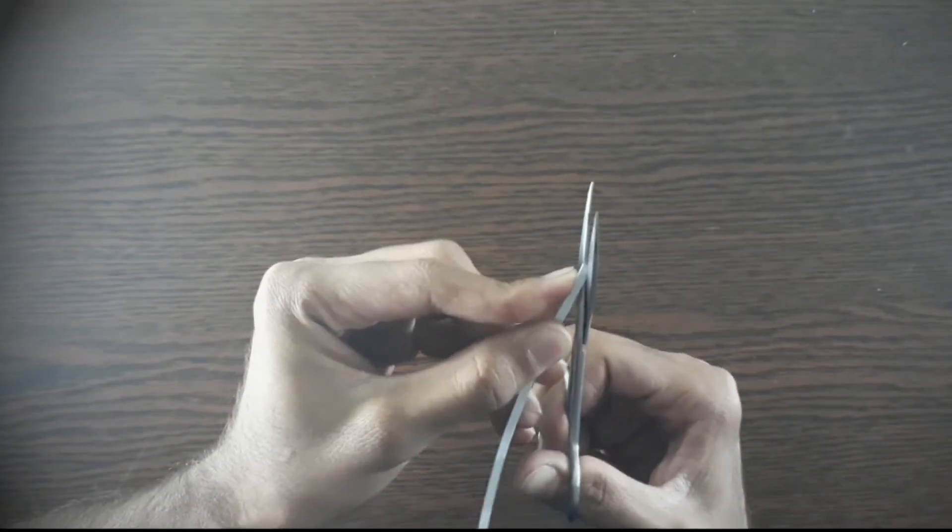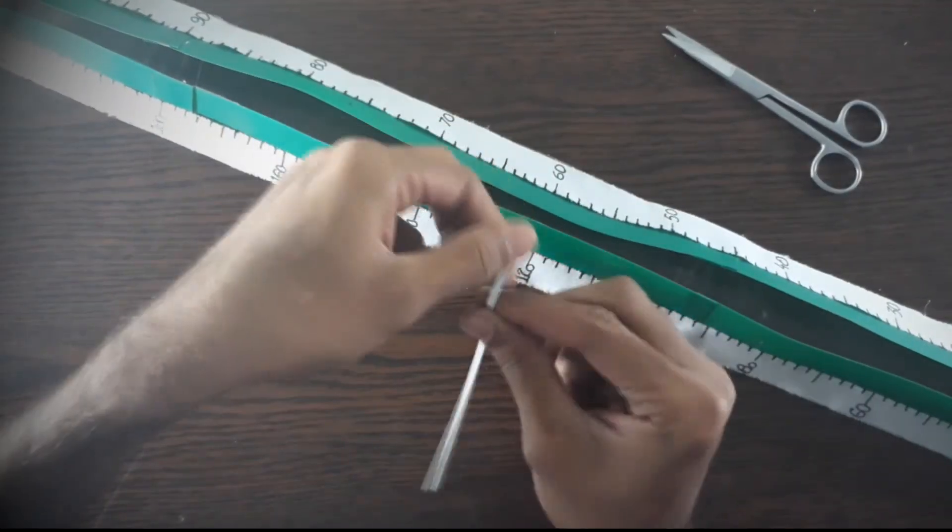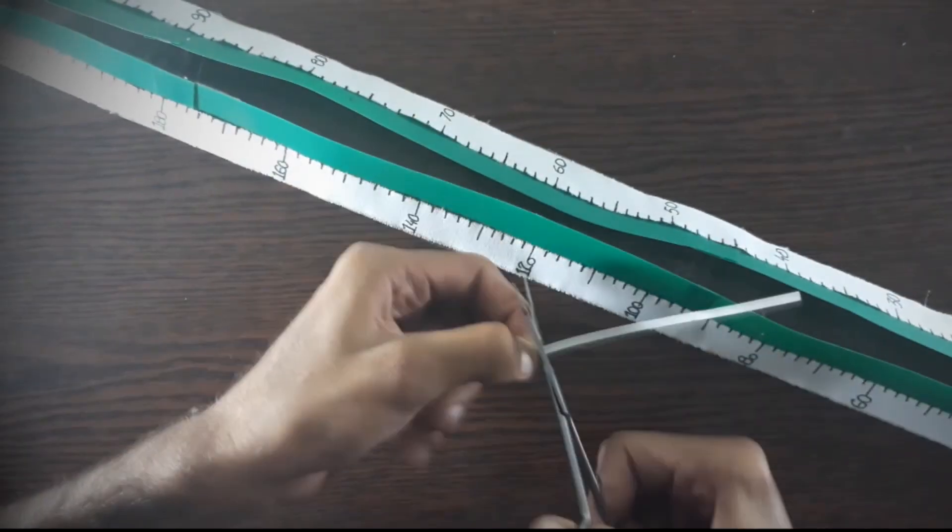Now we are left with a pointer. I'm making this pointer with the metal strip taken from the file, as it's very easy to bend or deform it.